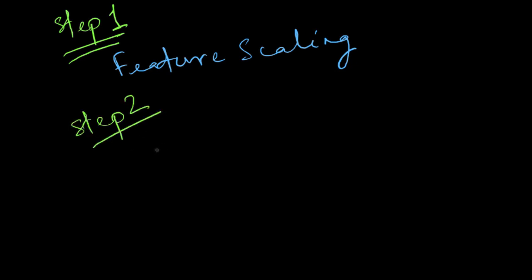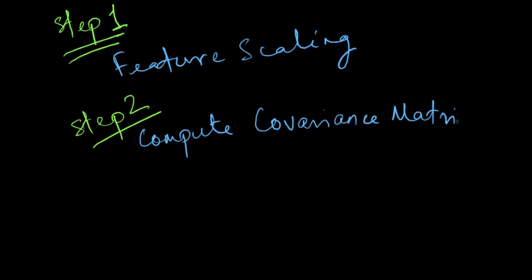Step two is to compute the covariance matrix. We will see the mathematical details in the next video, but intuitively speaking it is the version of variance for a multi-dimensional problem. If you have seen the video on Gaussian mixture models, I introduced the idea of covariance matrix for a multivariate Gaussian distribution, and the same formula is applicable here. In other words, it is just a way to estimate the variances for a multi-dimensional problem. This covariance matrix is going to be very crucial for our calculations.